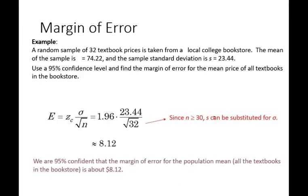Here's an example. Going back to our textbooks, we have 32 from a local college bookstore with a mean of $74.22 and a sample standard deviation of $23.44. For a 95% confidence interval, that gives us a z-score of 1.96 plus or minus,